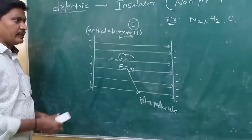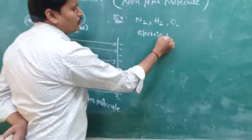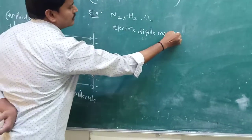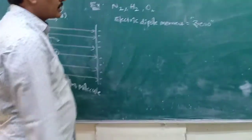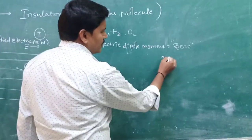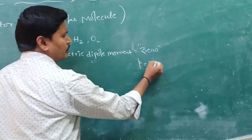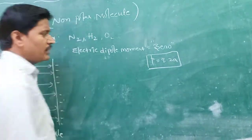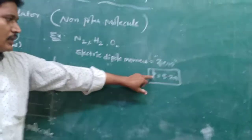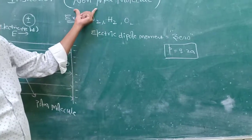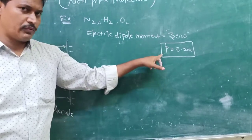For a non-polar molecule, the electrical dipole moment is zero. The dipole moment formula is P = Q × 2d, that is, the magnitude of charge multiplied by the separation between the two charges. Since there is no separation in a non-polar molecule, 2d equals zero, and therefore dipole moment is zero.